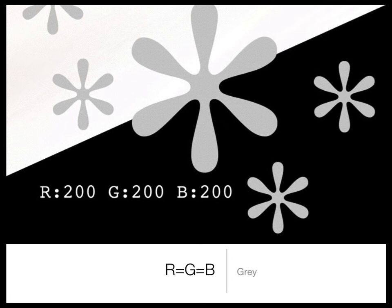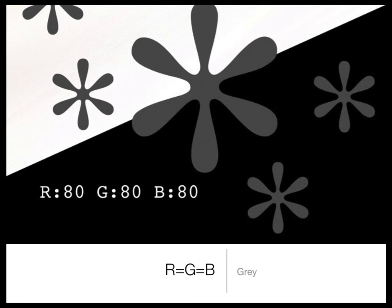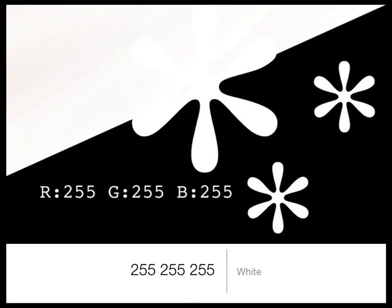When the red, green, and blue values are all the same, you get a shade of gray. When the values are quite high it's a light gray. As the values get lower the shade of gray gets darker — no one color is dominating. Lower again and darker again, until you get very dark.